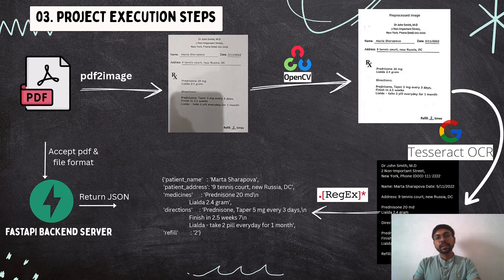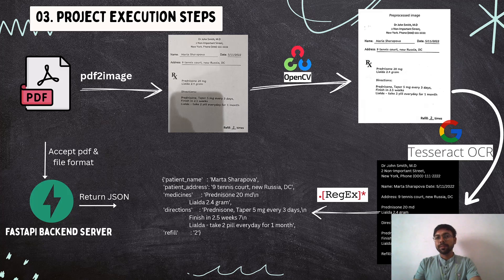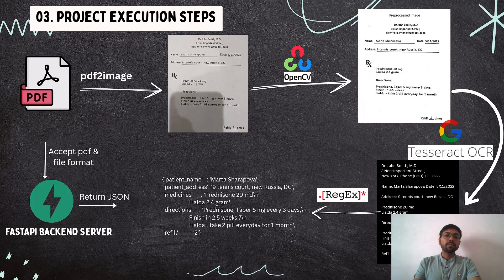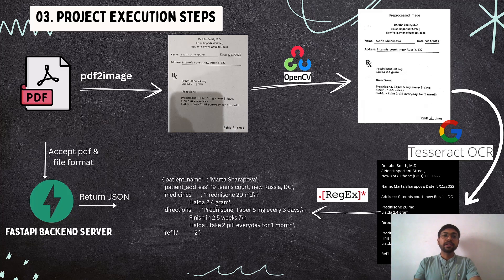Now let me take you through the project execution steps. Our documents are in the form of PDF files. The first step is converting PDF to image using the pdf2image library. In the second step, we are pre-processing images using the OpenCV library. In the third step, we are extracting data from the pre-processed image using the Tesseract OCR engine. In the next step, we extract useful information like patient name and address in the form of a dictionary from the text using regular expressions. Finally, we create a FastAPI backend server that accepts a PDF file and returns a JSON object.